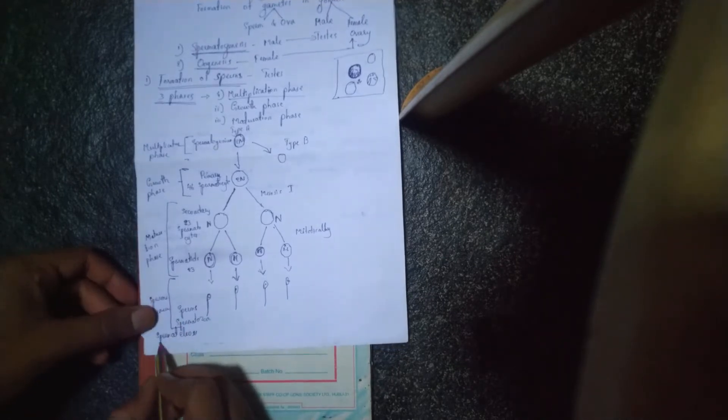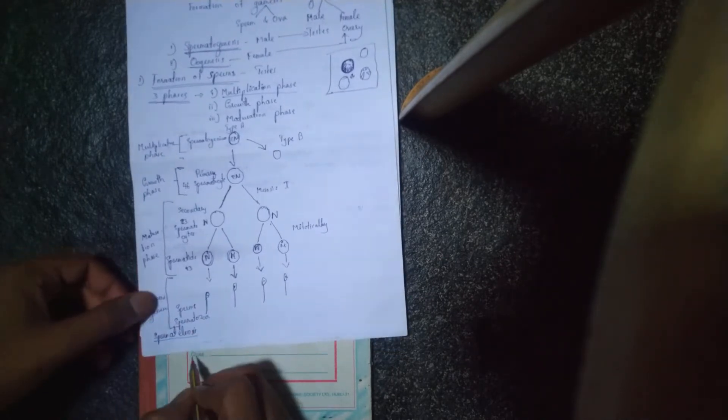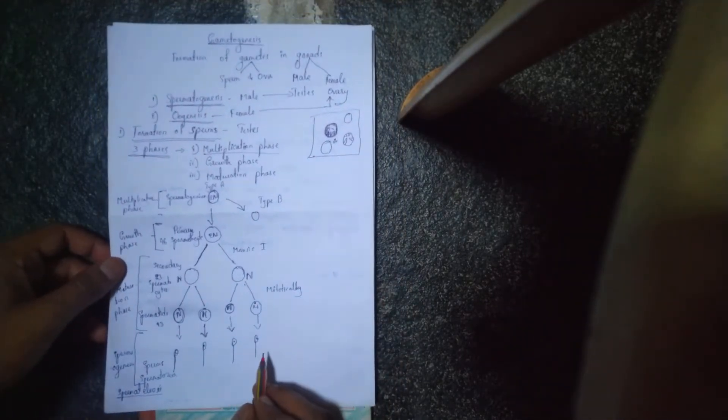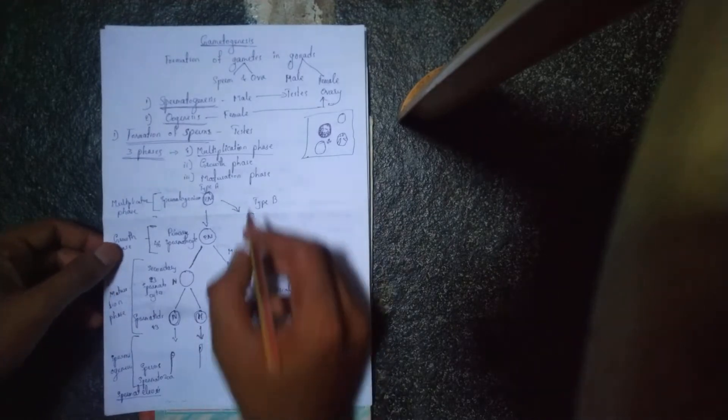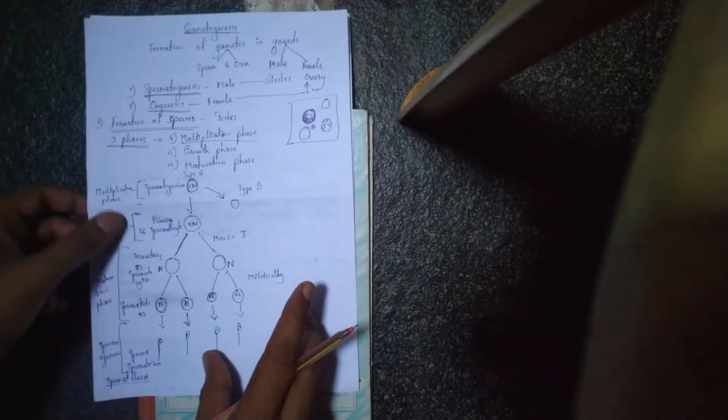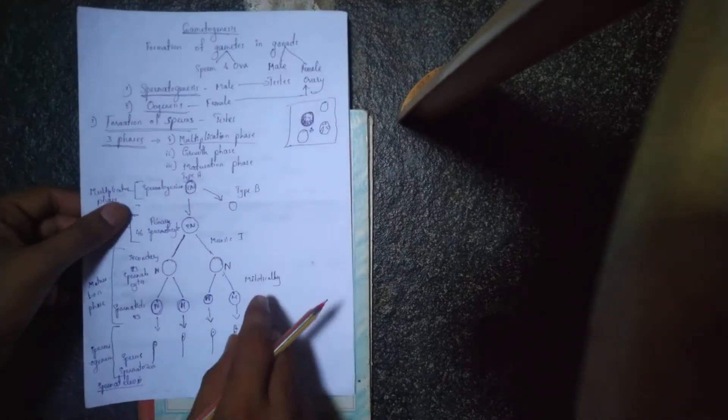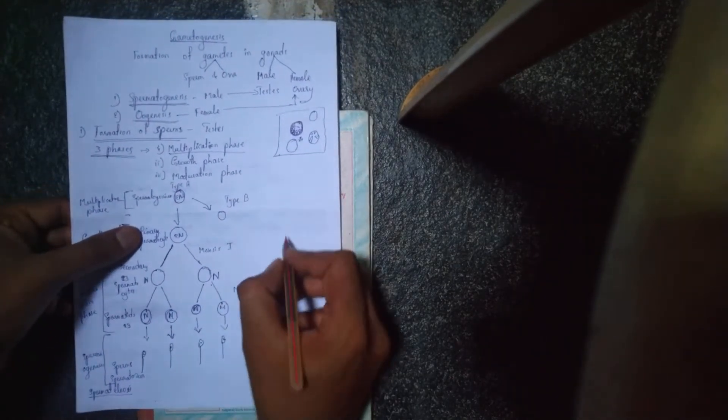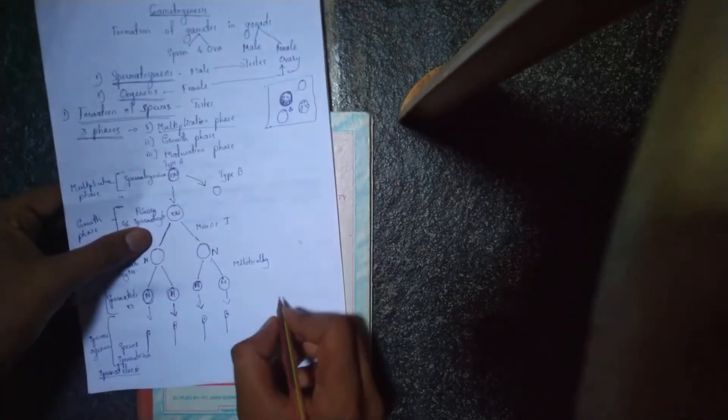Spermiogenesis or spermatiliosis is the process of spermatogenesis. The entire process of spermatogenesis is initiated due to the increase in hormones. It is all regulated by hormones.